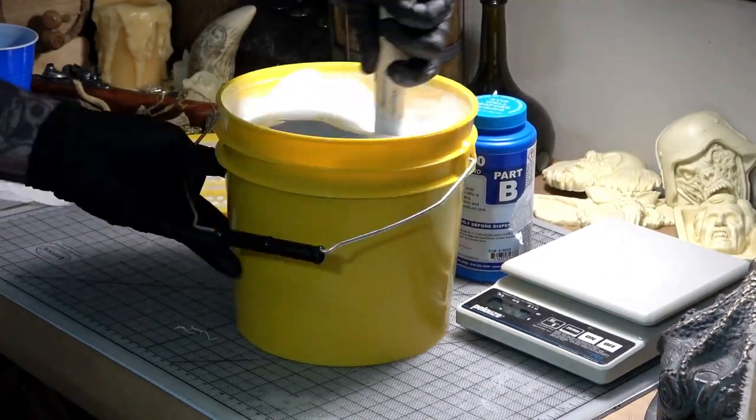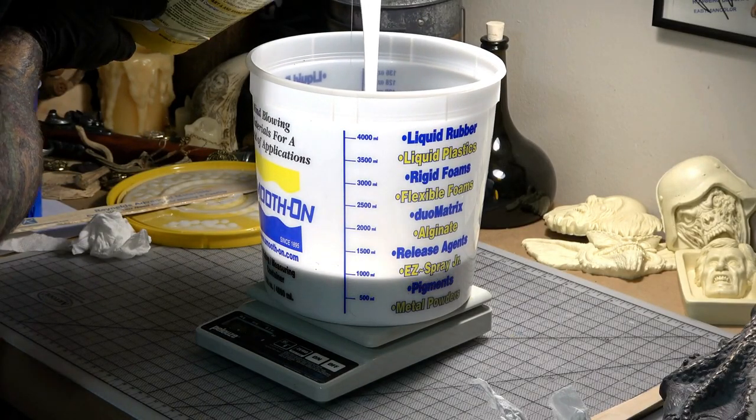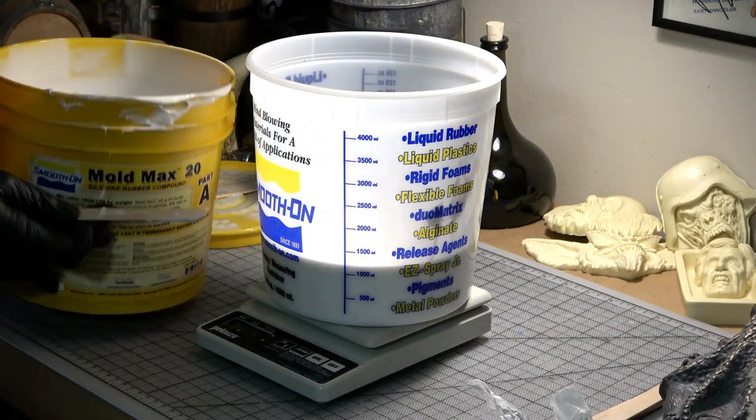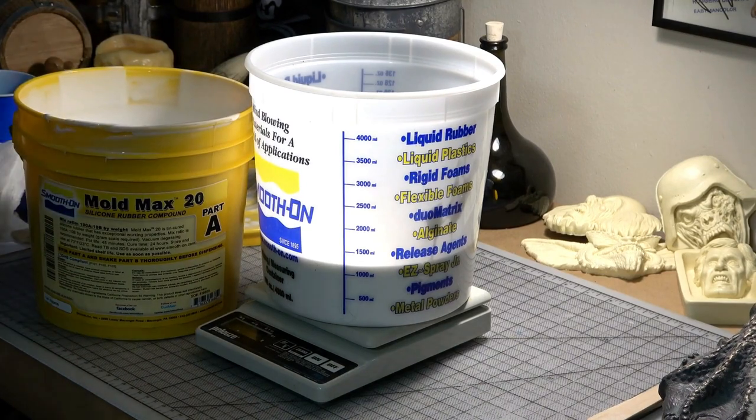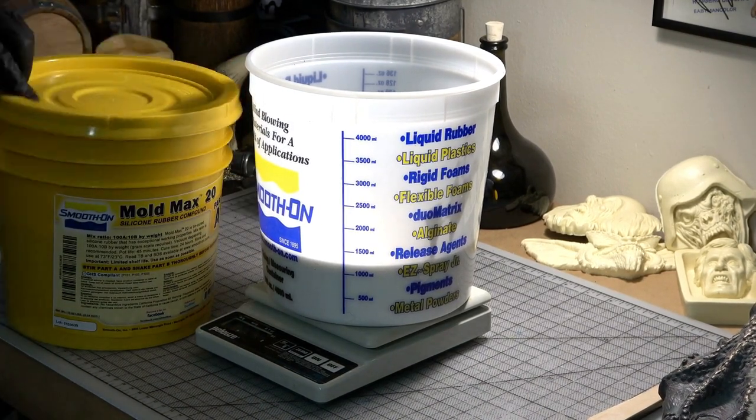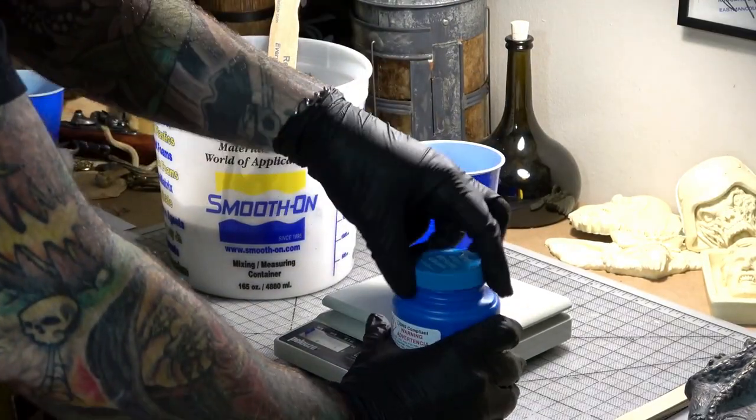Like most tin-based silicones, it is a 10 to 1 ratio. So first I weigh out enough part A for the three molds. Part A is the silicone base. Remember to always keep your containers and workspace really clean. This will help to avoid cross-contamination of parts. Next, I weigh out part B, the catalyst, which will only be 10 percent of the weight of part A.